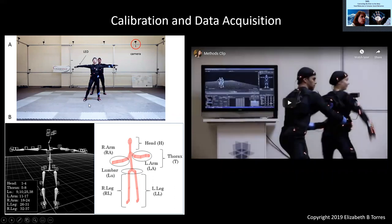This is an example of data acquisition and calibration using a grid of cameras that sample at 960 hertz — we mentioned these cameras in last lecture. This is the face space, and we can create our own avatar and represent the positions and orientations of the various parts of the limbs, the trunk, and the head. This is possible because we have a grid of 78 sensors across the two dancers.